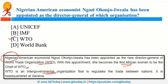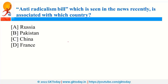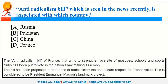The Anti-Radicalism Bill recently in news is associated with France. This bill aims to strengthen oversight of mosques, schools, and sports clubs, and has been proposed to address the issue of radical Islam.